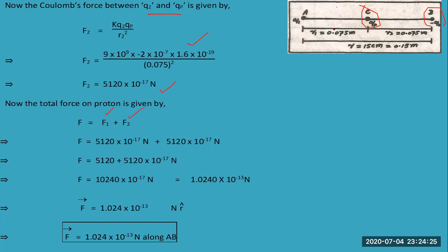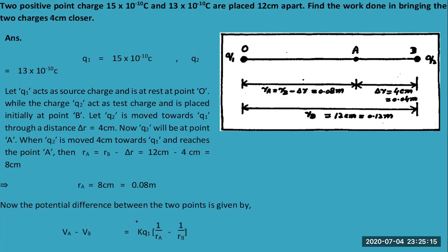Both forces act in the same direction, so F = 5120 × 10^-17 + 5120 × 10^-17 = 10240 × 10^-17 N = 1.024 × 10^-13 N. This unit vector shows the direction of the force, which is along A to B. The direction does not change because it's carrying a positive sign.